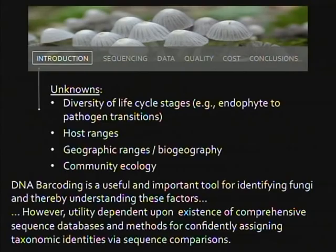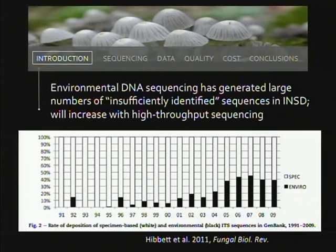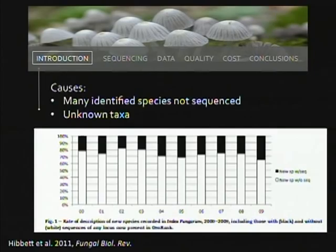DNA barcoding is a useful tool, but as demonstrated several times today, if we don't have databases of well-identified specimens to draw upon, the inferences from sequence comparisons will be either impossible or simply wrong. Environmental sequencing has added a large number of insufficiently identified sequences. This graph from David Hibbett's 2011 paper shows that in some years, over 40% of ITS sequence additions to GenBank are from environmental sequences, not specimen-based sequences. If we count 454 studies and other high-throughput sequencing studies, that is probably above 90%.